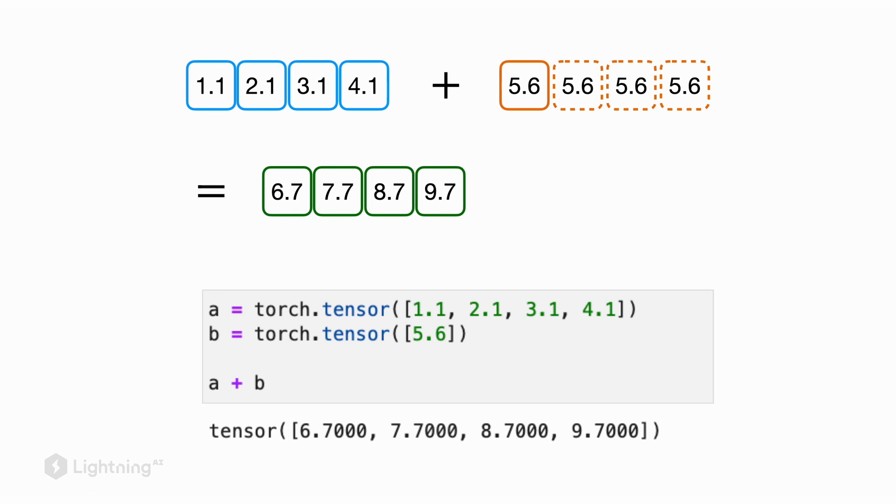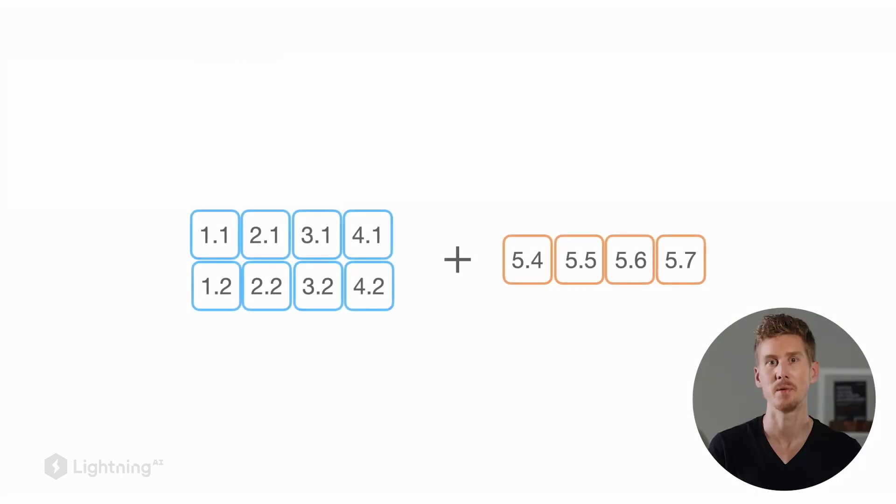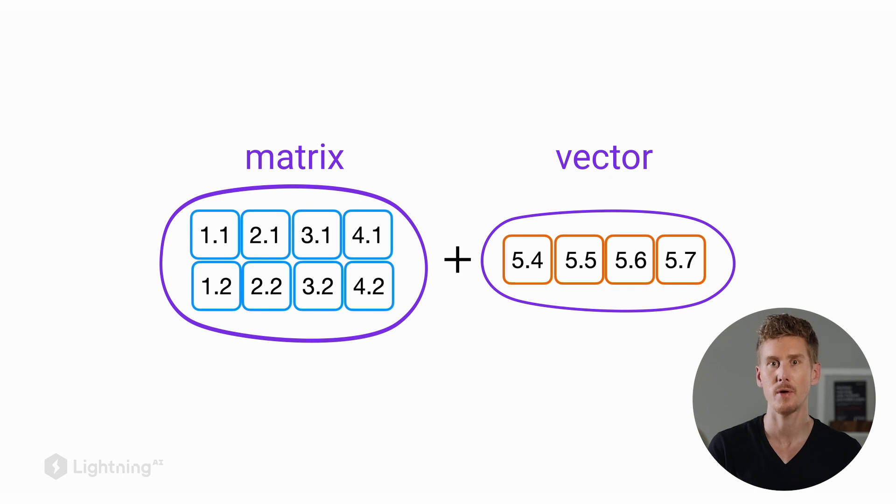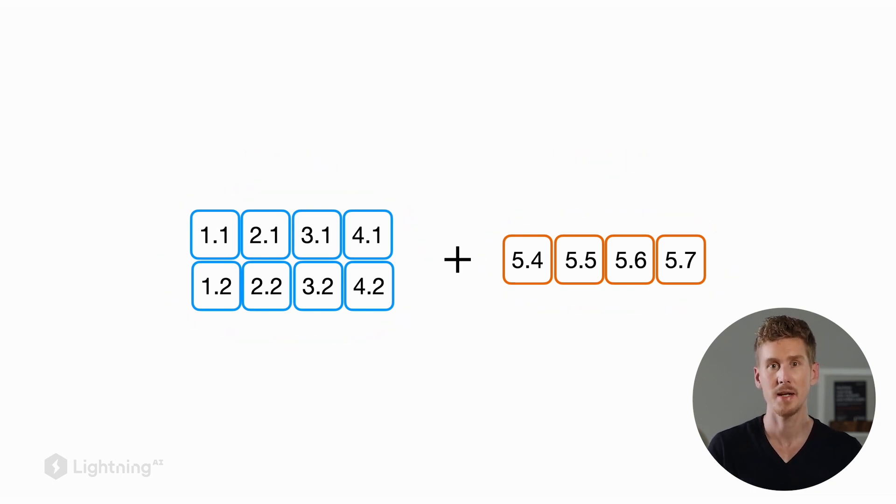Similarly, we can add a vector to a matrix as shown here. On the left hand side we have a 2 by 4 dimensional matrix and on the right hand side we have a vector consisting of four values. When we add this vector to this matrix, in linear algebra this would not be possible because that would be a dimension mismatch.